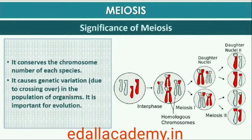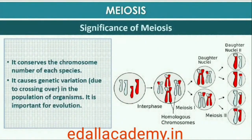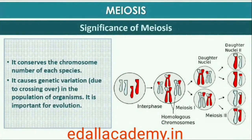Meiosis is the mechanism by which conservation of the specific chromosome number of each species is achieved across generations in sexually reproducing organisms, even though the process paradoxically results in reduction of chromosome number by half. It also increases the genetic variability in the population of organisms from one generation to the next. Variations are very important for the process of evolution.